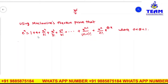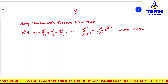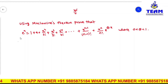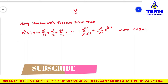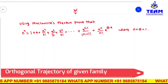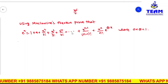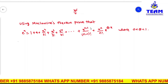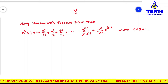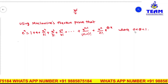Hi friends, in this video we are solving problems on Maclaurin's theorem. The problem is: using Maclaurin's theorem, prove that e^x = 1 + x + x²/2! + x³/3! + x⁴/4! + ... + x^(n-1)/(n-1)! + (x^n/n!) · e^(θx), where θ lies between 0 and 1.